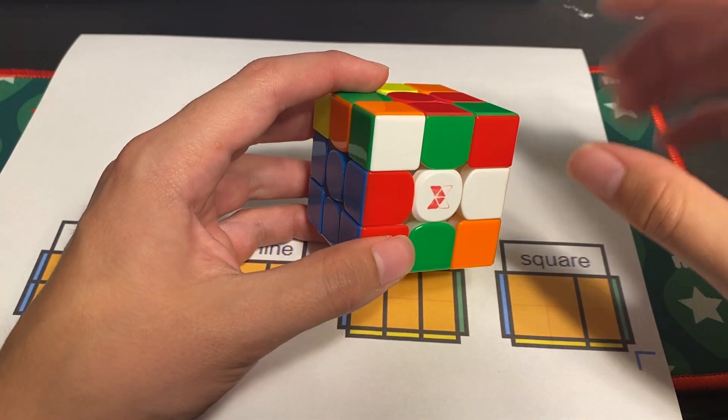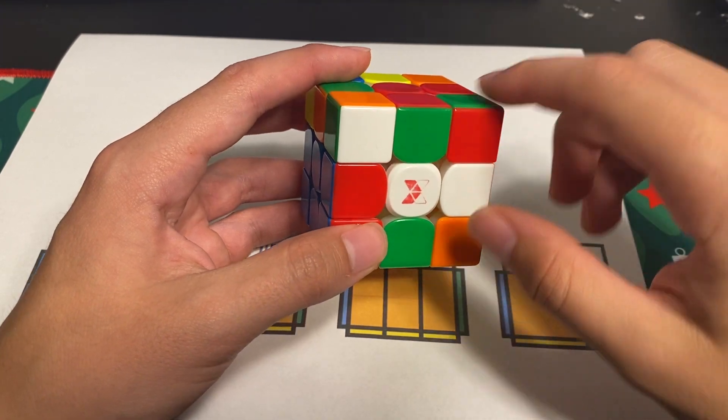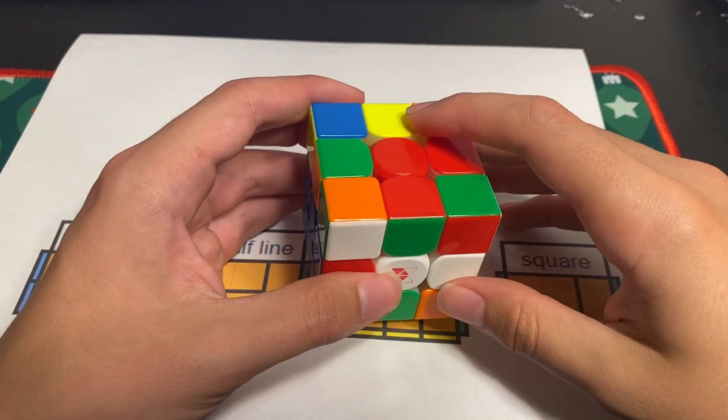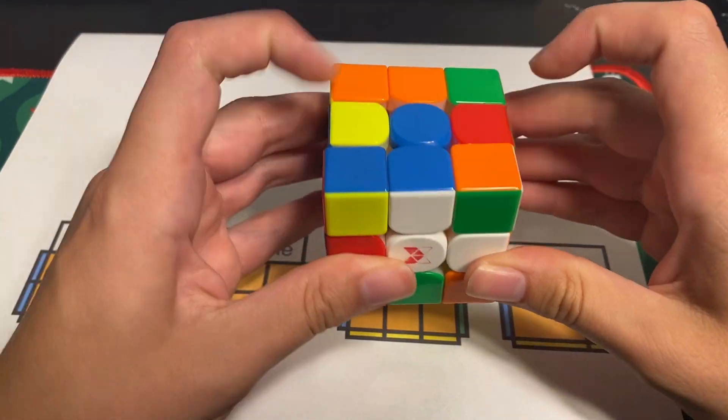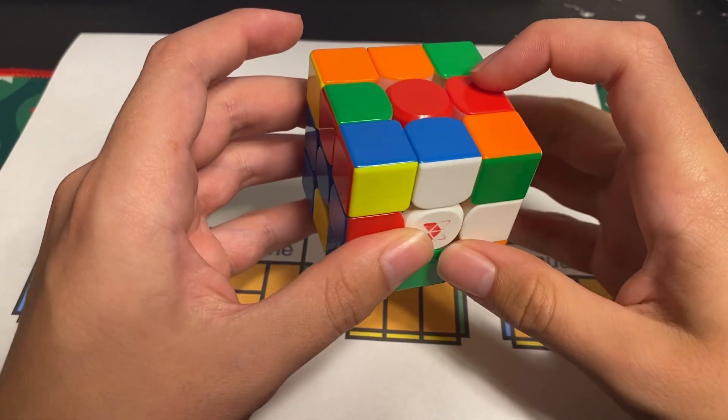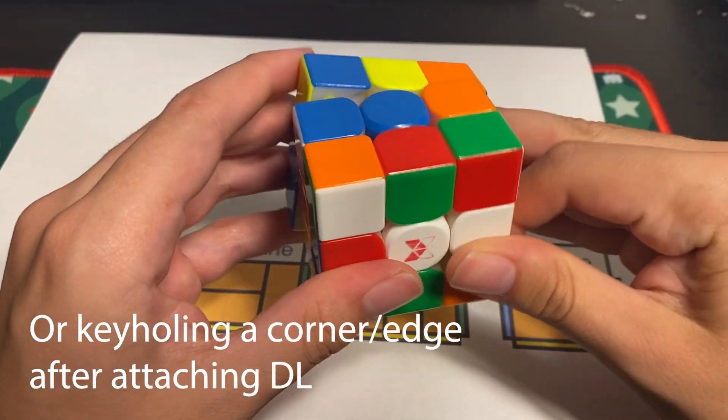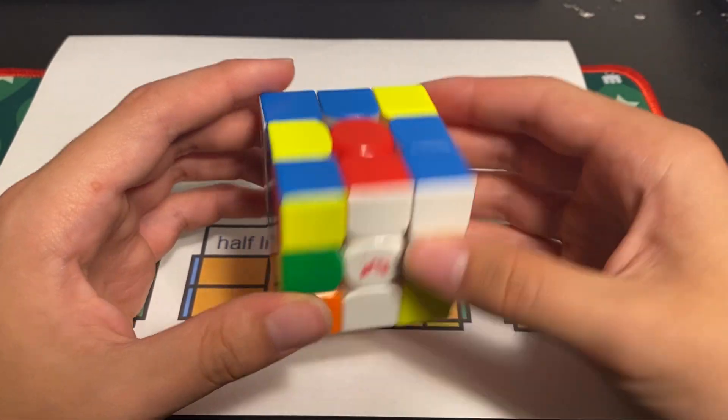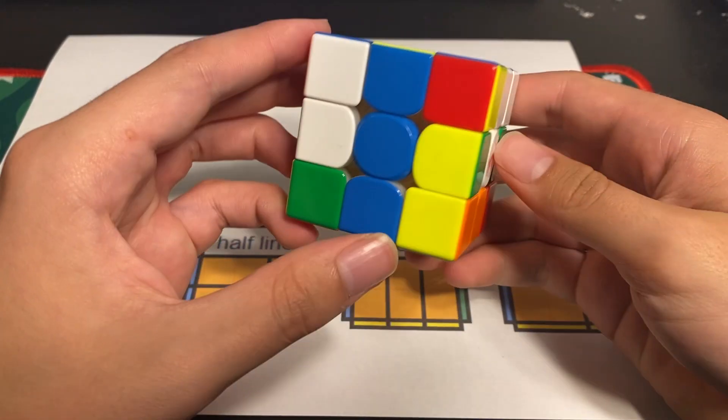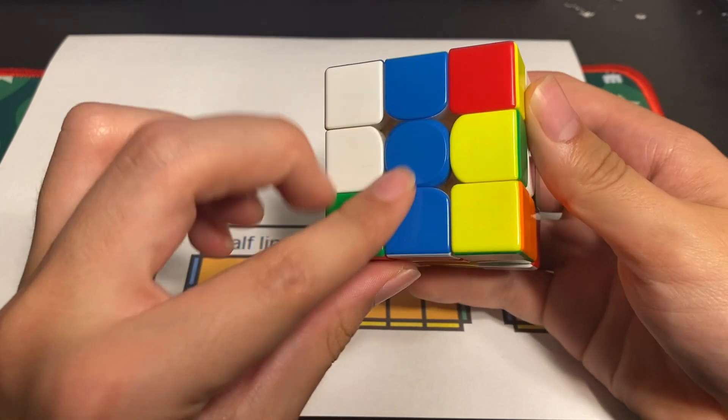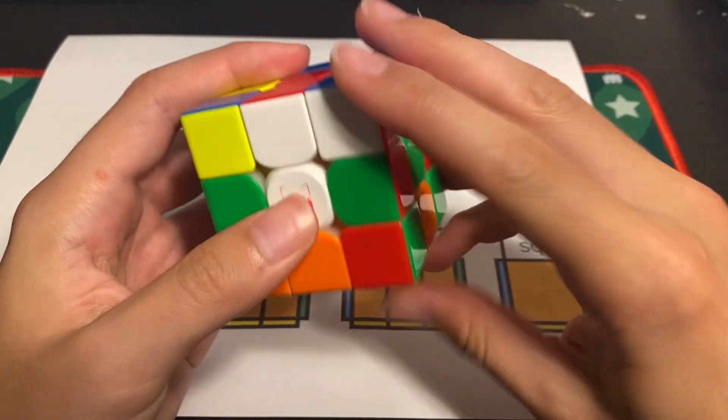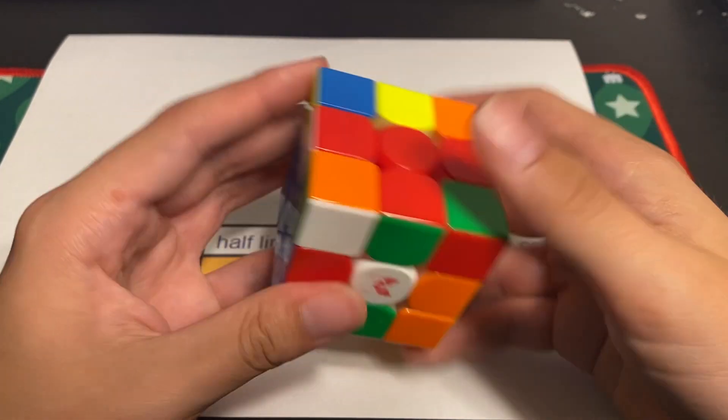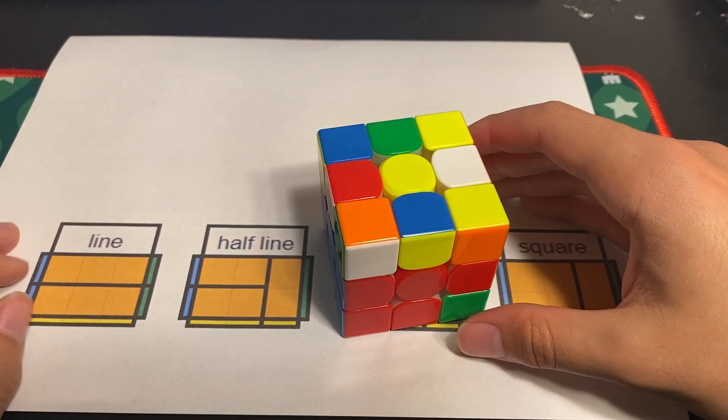When you're doing DL your pair insertion should all be with some variation of an F or B move and that's how you should be ending the block unless you're doing something like inserting the DL with S moves but that's pretty rare. If you see DL one move away or maybe two moves away or attached and you see free pairs or one move pairs or two move pairs, then that's a good sign that you might want to use DL on that scramble.